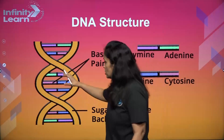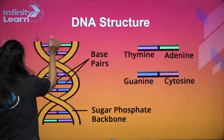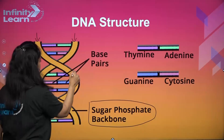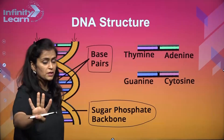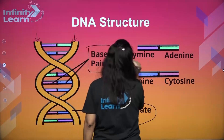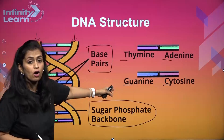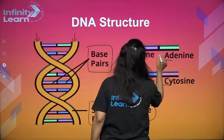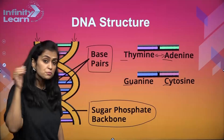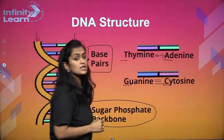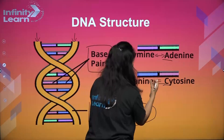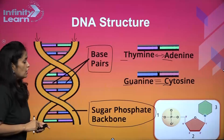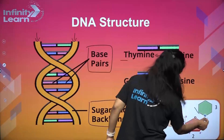We have something called base pairs. DNA has two strands made up of sugar and phosphate bonds. These sugar and phosphate molecules make the backbone, and in between you have base pairs. There are four base pairs: ATGC — adenine, thymine, guanine, and cytosine. The pairing is also fixed: adenine always pairs with thymine, and guanine always pairs with cytosine. There are hydrogen bonds between them, and that is why this DNA structure stands like a helical ladder.